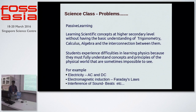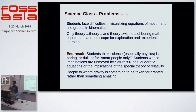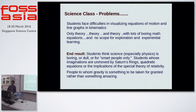Because of these problems of theory, theory, and only theory — mug up, reproduce, and get good marks — there is no scope for learning by doing or learning by exploring and experimenting. The end result is students think science is a very boring, dull, difficult subject, only for smart students. We end up with people whose imaginations are unmoved by Saturn's beautiful rings, people who take gravitation for granted and don't feel it as something amazing.